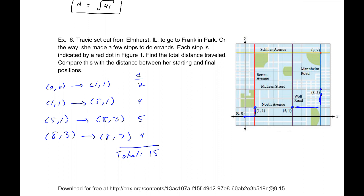Now, compare this with the distance between her starting and her final positions. For that, we are actually going to calculate using the formula we had. Distance equals, now our points are (0, 0) and (8, 7). So, x₁, y₁, x₂, y₂, the square root of x₂ - x₁, 8 - 0 squared